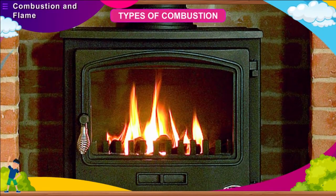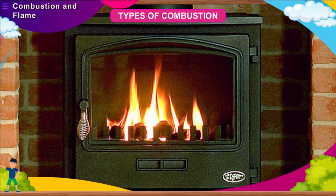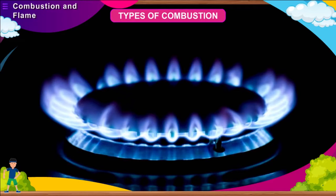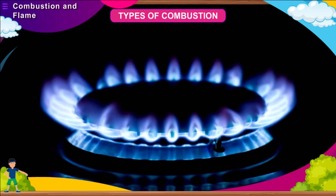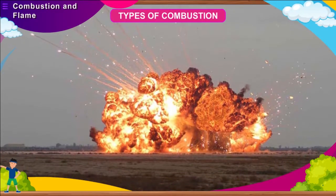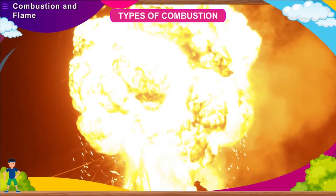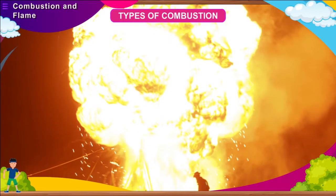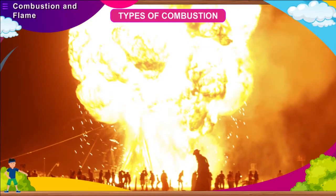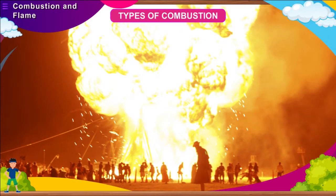Types of combustion: combustion may either be rapid, spontaneous, or explosive. When a substance burns rapidly and produces heat and light, it is said to be rapid combustion — for example, burning of a gas stove. When a material suddenly burns into flames without the application of any apparent cause, it is said to be spontaneous combustion. When fire breaks out suddenly with the evolution of heat, sound, and light, it is said to be an explosion. A large amount of gas is liberated in such a case.